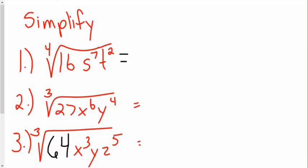Number 1. So, I figure out what times what times what gives me 16, which we know is 2. Then I take S and 7 divided by 4. I can't simplify that down, so that's just S to the 7/4. And then that's really T to the 2/4, but I can simplify that down to T to the 1/2.